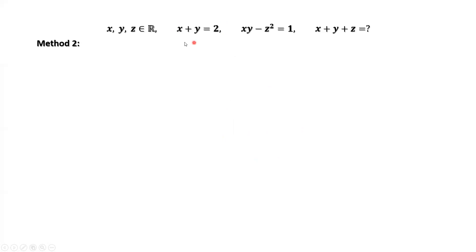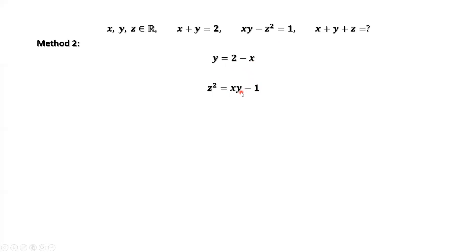The second method. From the first given condition, we have y equals 2 minus x. From the second given condition, we have z squared equals xy minus 1. In this equation, we replace y by 2 minus x on the right-hand side.